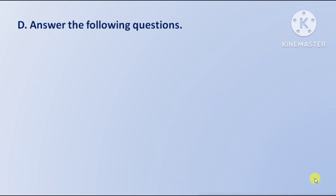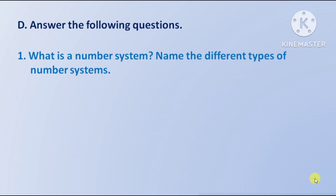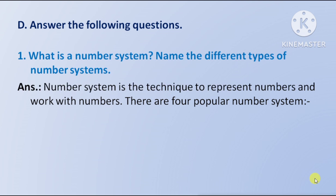Section D: answer the following questions. First question: what is a number system? Name the different types of number systems. Answer: a number system is the technique to represent numbers and work with numbers.